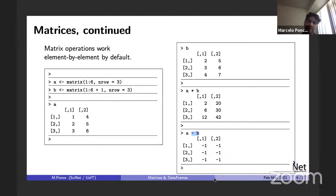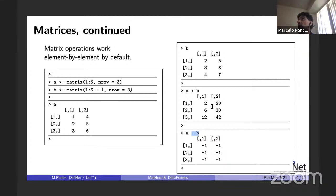In R, the basic operators like `*`, `+`, and `-` are applied element-wise on matrices. We're going to see how to perform proper matrix-matrix and matrix-vector multiplication in a second — that requires a different operator.